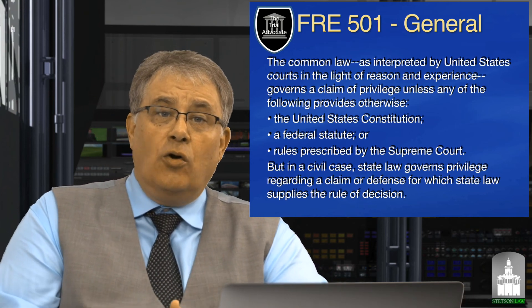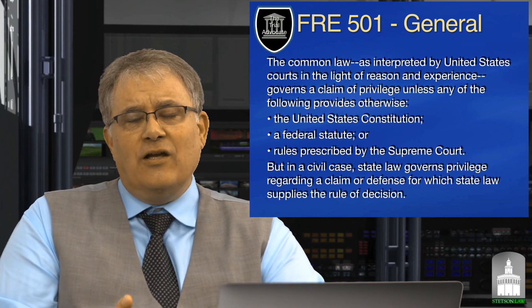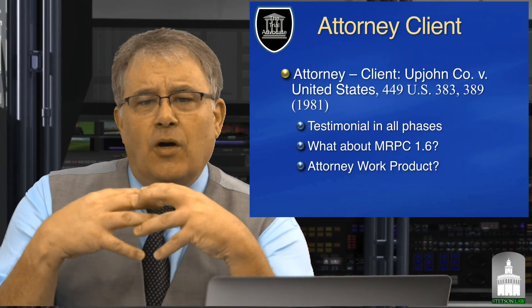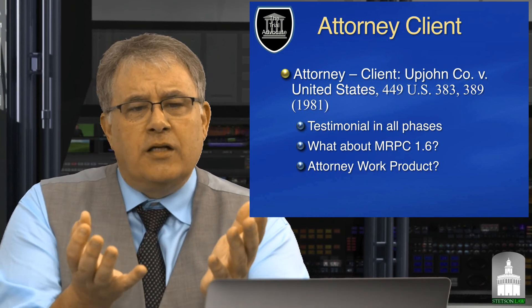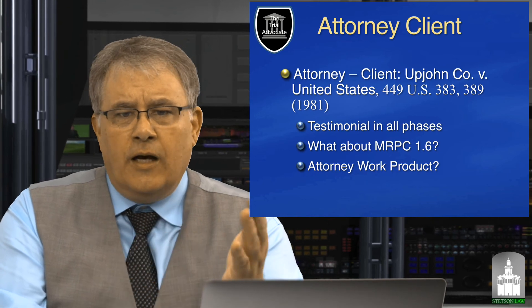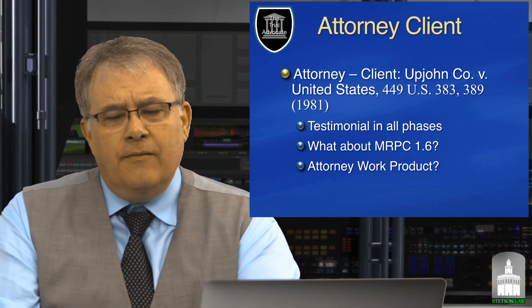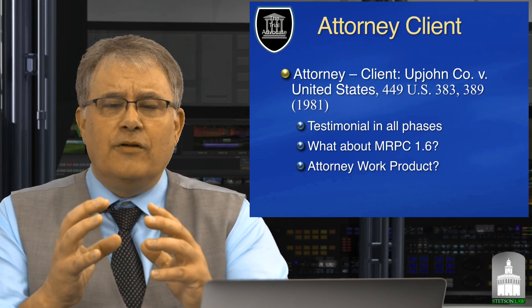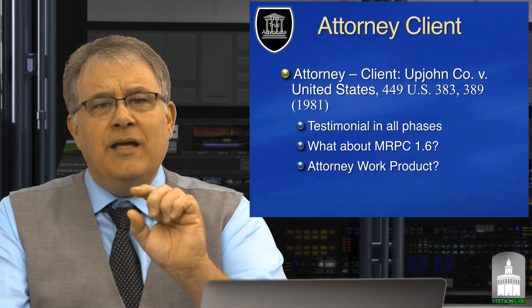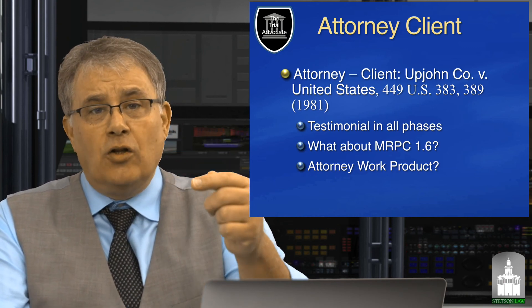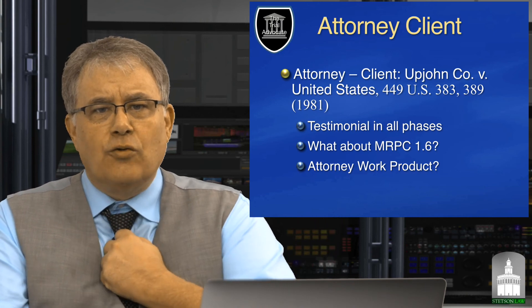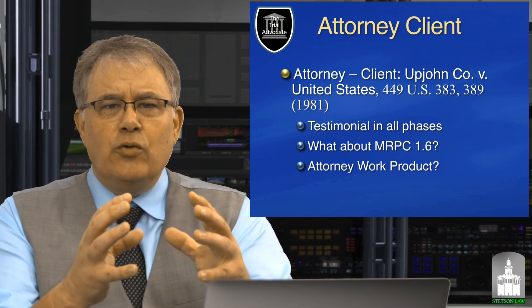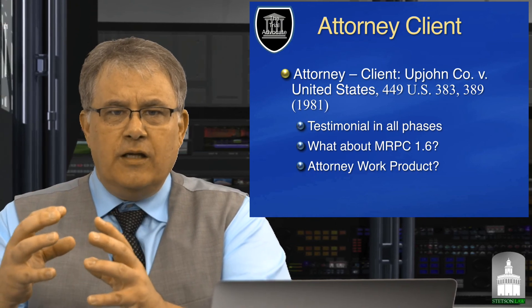What Congress did was drop back to fundamental statements: common law, and state law applies when it's a state cause of action. They also addressed attorney-client privilege, flowing out of the Supreme Court case Upjohn Company v. United States, a 1981 case. Attorney-client privilege is a testimonial rule — you cannot be forced as the lawyer to testify against your client, and the client holds the right to assert that privilege. The client has to waive it.